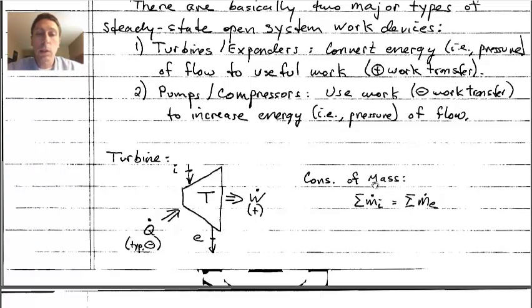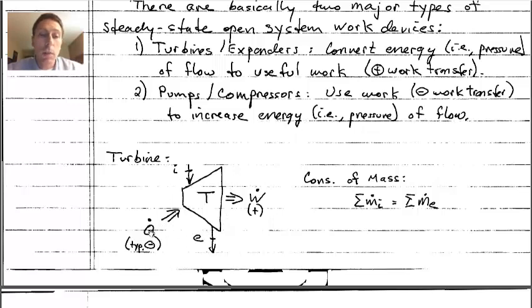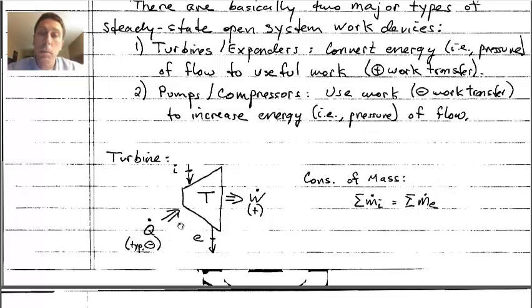Continuing from our turbine discussion last week: we have this turbine arrangement with an inlet flow, an exit flow, and possible heat transfer interactions. I always draw diagrams with energy transfers in their positive orientation, so I draw heat transfer going into the system — but note that for a turbine, heat transfer is typically negative, meaning it actually flows from the system to the surroundings. This avoids confusion when applying the governing equations.